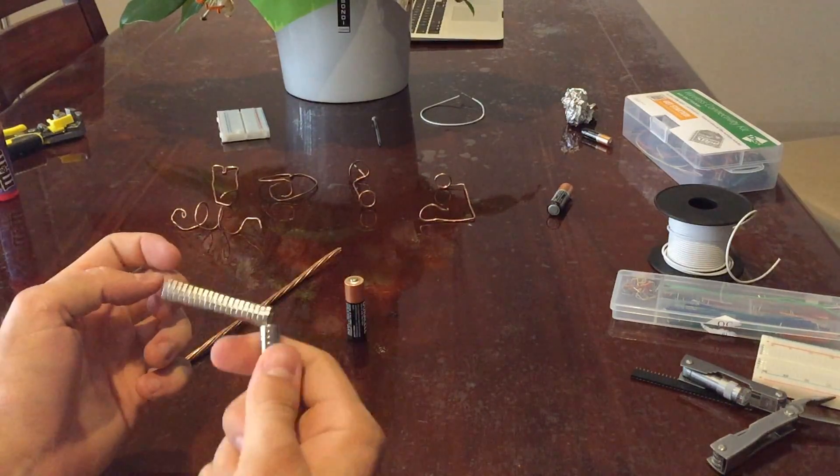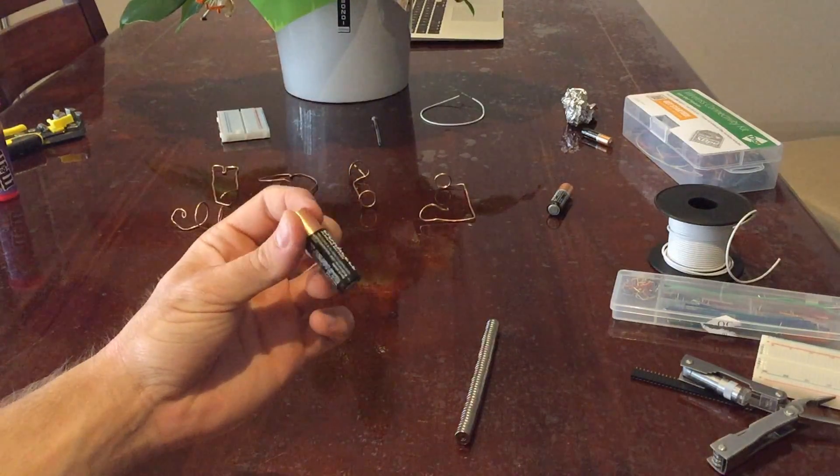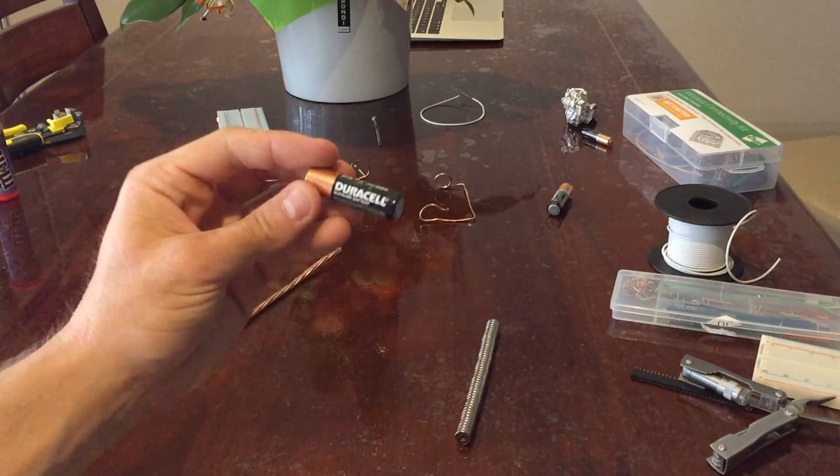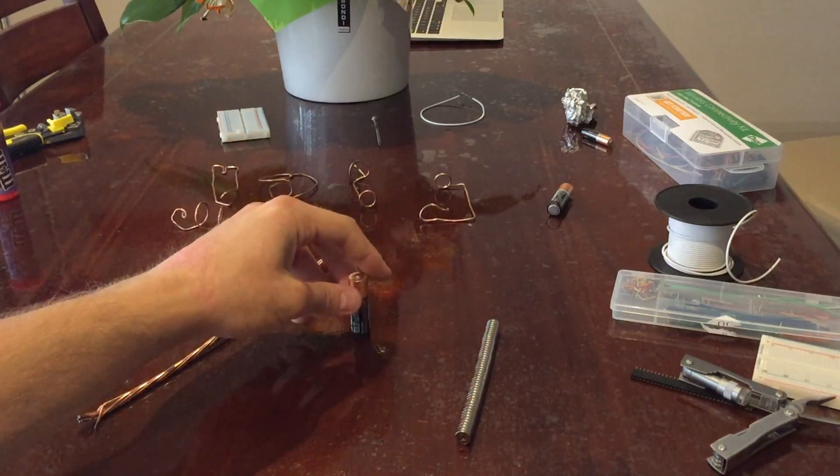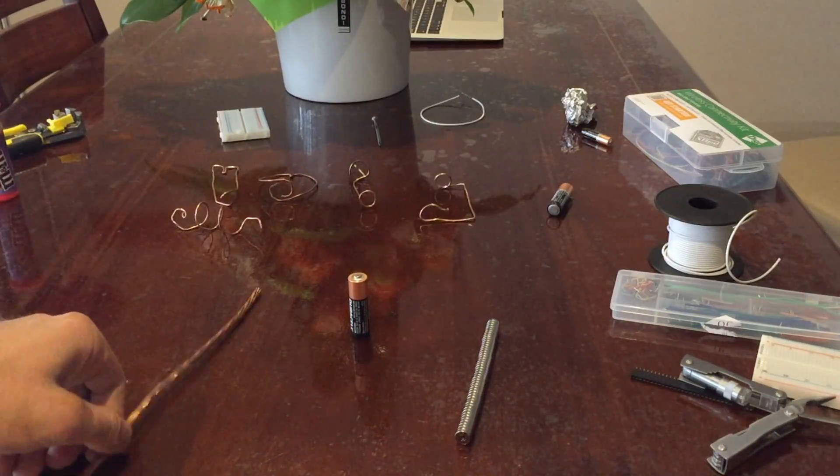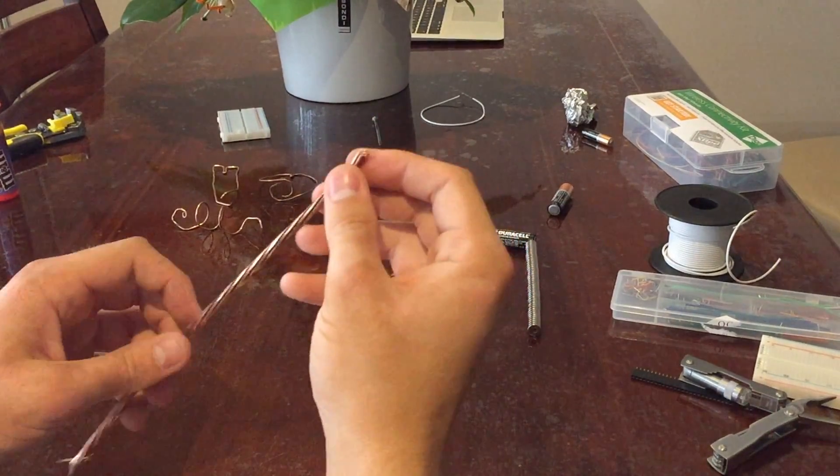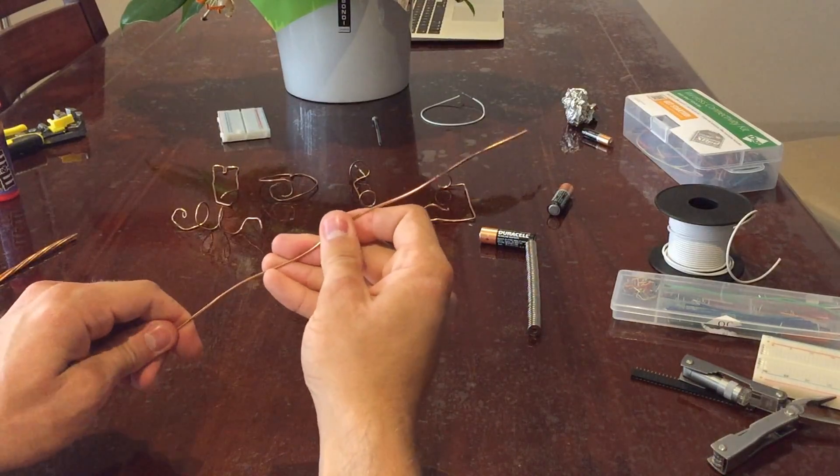So you'll need three things basically: some neodymium magnets, a battery, and some copper wire. Now with the copper wire I recommend a thicker gauge, I probably use a bit over a millimeter, I think 16-18 gauge should be okay.